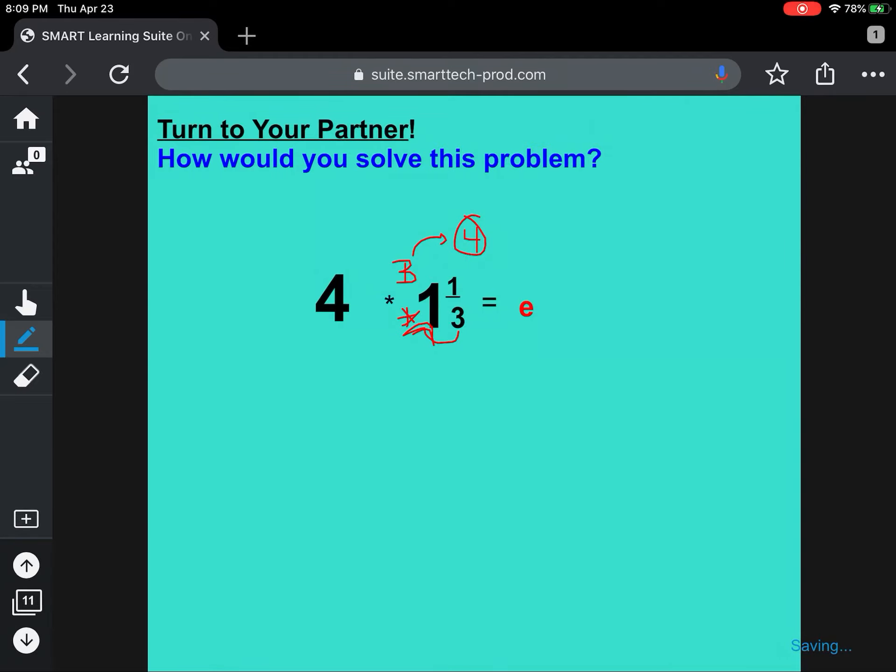So your answer would be 4/3. So 1 and 1/3 is the same as 4/3. You take 3 times your whole number. Then that answer, add on your numerator. So the 1 and 1/3 as a mixed number is 4/3. Then you can multiply it times your whole number.